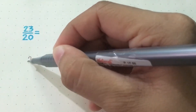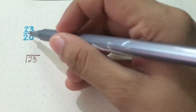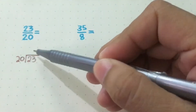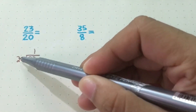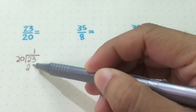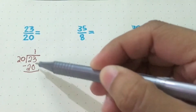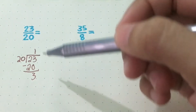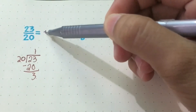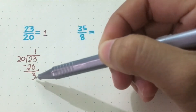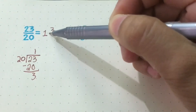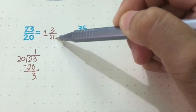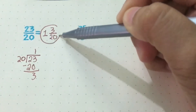So the numerator is 23, and divide it by the denominator 20. 23 divided by 20, you'll get 1. 20 times 1 is 20, then subtract. 23 minus 20, you'll get 3. Now, to form the mixed number, your answer will be the whole number, the remainder will be your numerator, and the divisor — or the denominator — is 20. So it is 1 and 3 over 20.